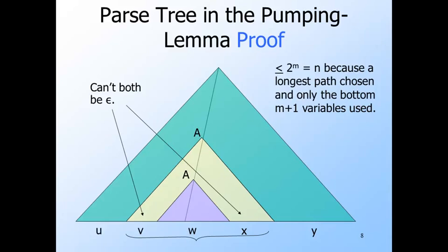Moreover, once we have a variable not on the path, there are no epsilon productions, so we must generate from this variable at least one terminal. That is all we need to conclude that either V or X or both have length at least one.